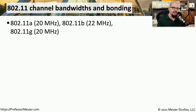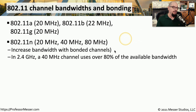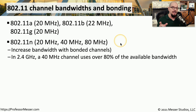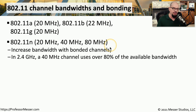802.11a, b, and g use channel bandwidths around 20 megahertz: 20 megahertz for a, 22 for b, and 20 megahertz for 802.11g. When we introduced 802.11n, we increased our options, allowing 20 megahertz, 40 megahertz, or 80 megahertz channel widths. Some of these channel widths are only available on 5 gigahertz frequencies, since we don't have 80 megahertz of frequencies available on the 2.4 gigahertz range.